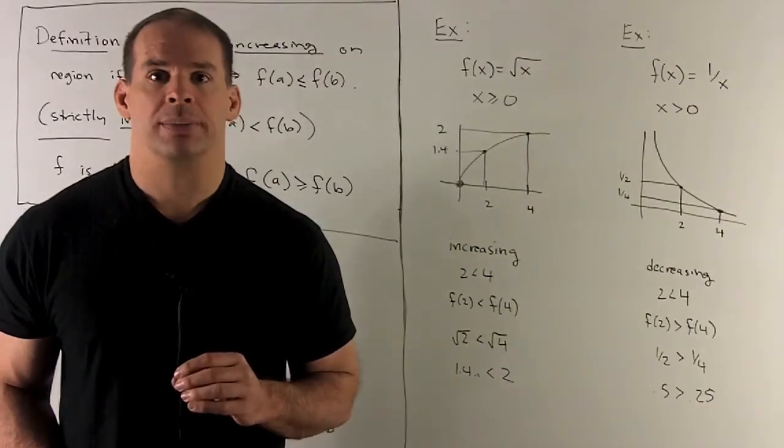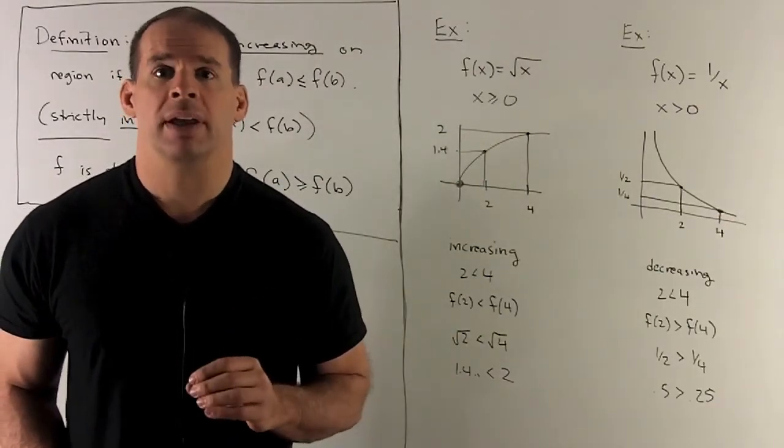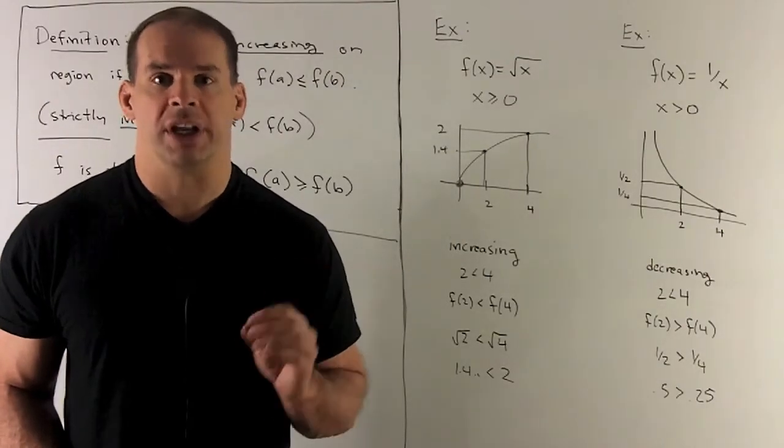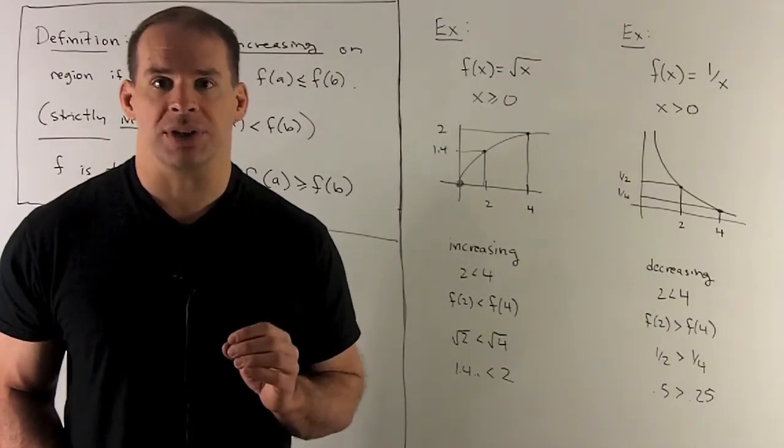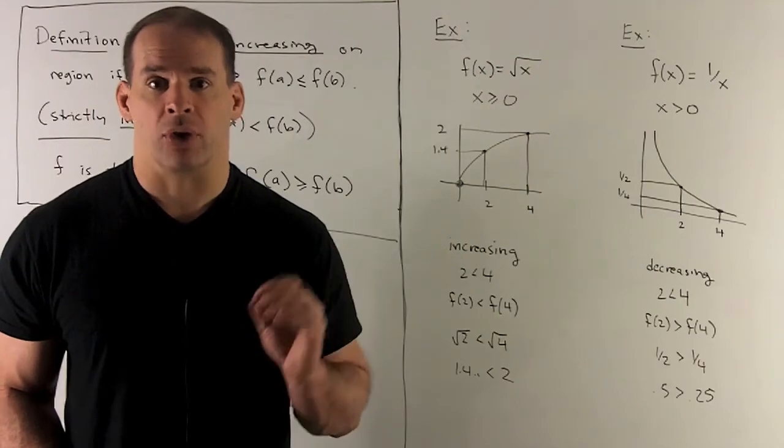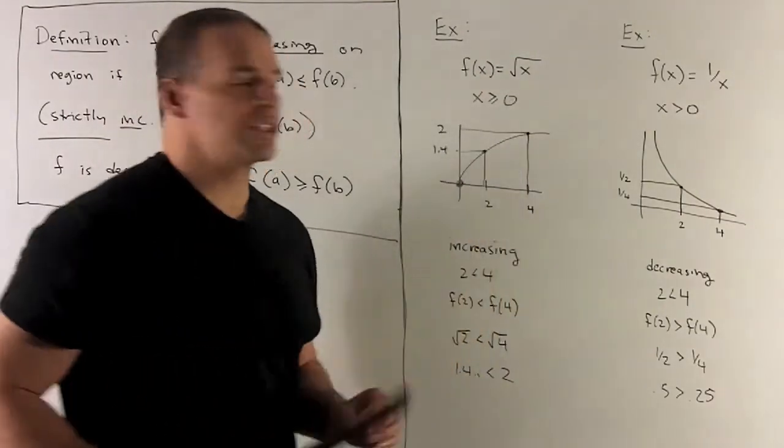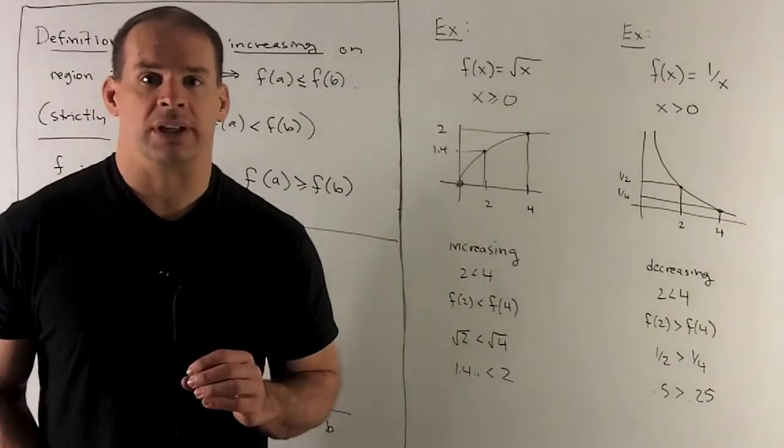Let's consider some examples. First example, f of x equal to square root of x. Our region here is going to be x bigger than or equal to zero. Draw the graph of square root of x, and it's going to look like this. If you notice, the graph here is strictly increasing.